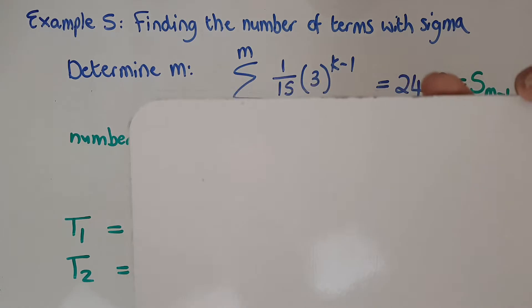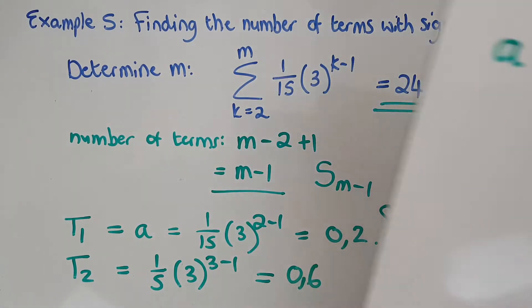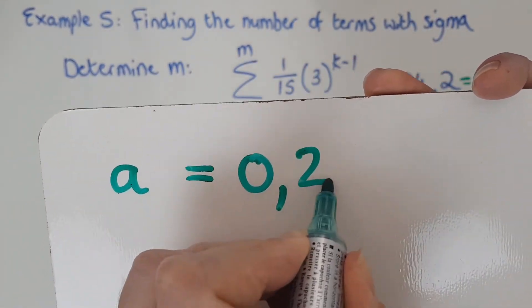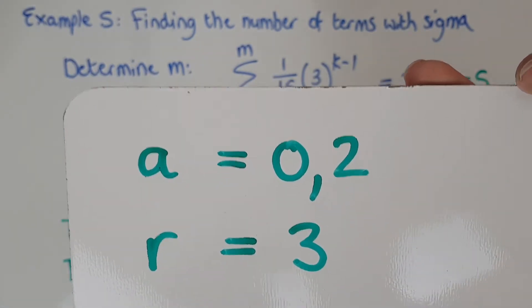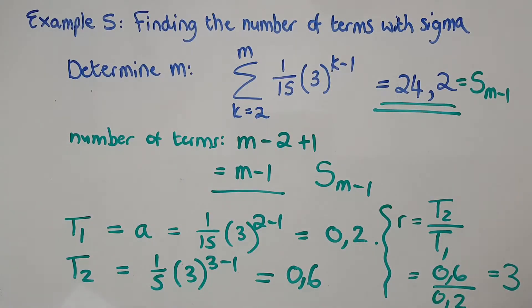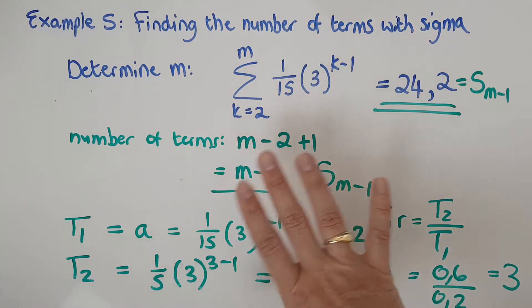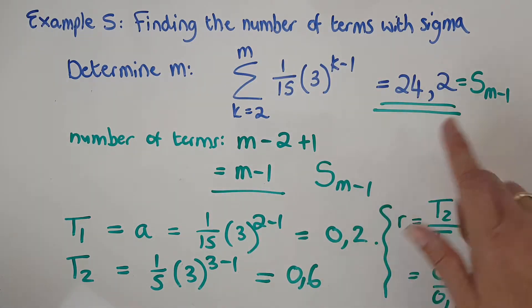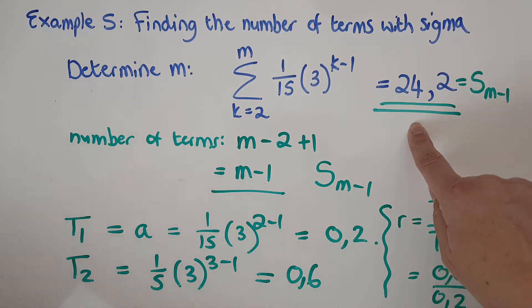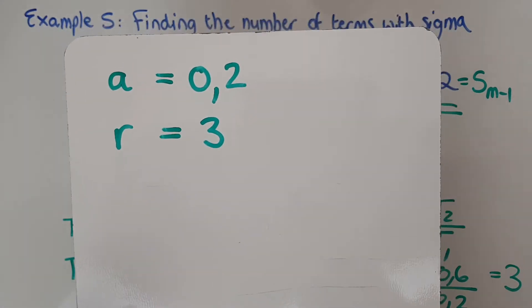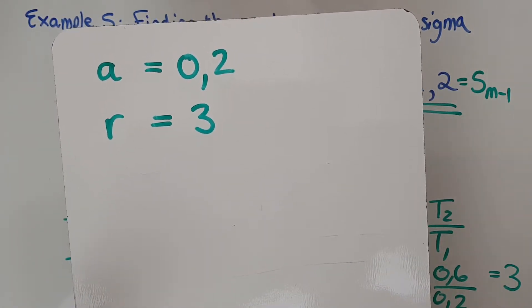From what I just worked out, I've got a equals 0 comma 2 and I've got r equals 3. What am I doing? Let's go back and check out the question. I've got to find the number of terms or m which is close to that with this whole thing and they're giving me the sum to the number of terms they don't give me. So I'm dealing with an Sn formula. I have a and r. I have Sn.